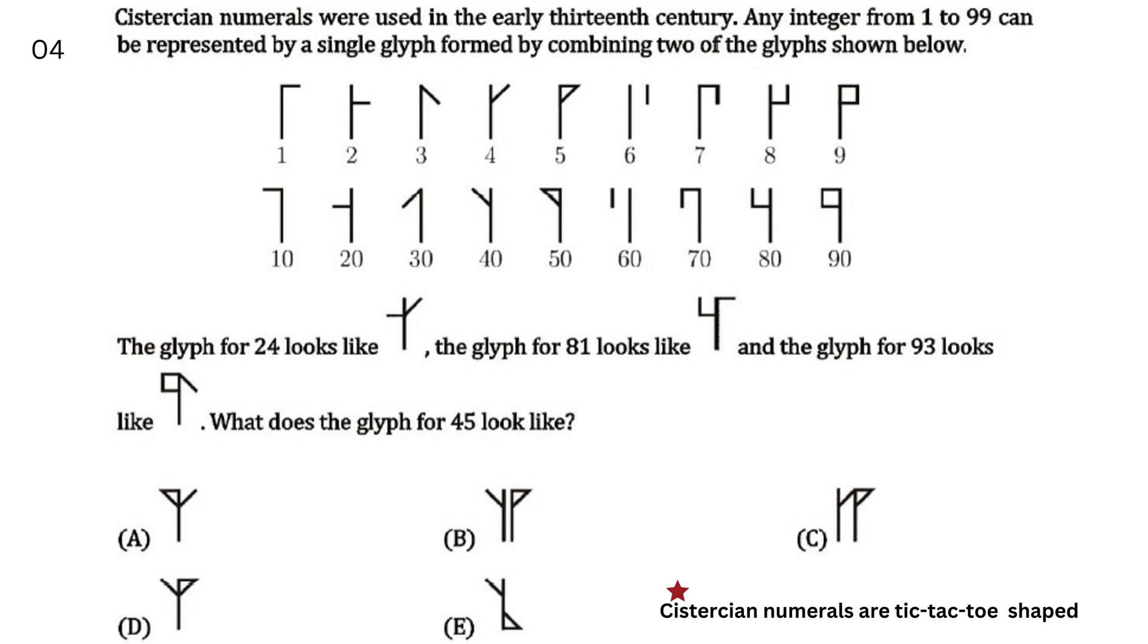Cistercian numerals were used in the early 13th century. We can represent any integer from 1 to 99 with a single glyph which is formed by combining two glyphs. Glyph for 24 looks like this, 81 looks like this, 93 looks like this.